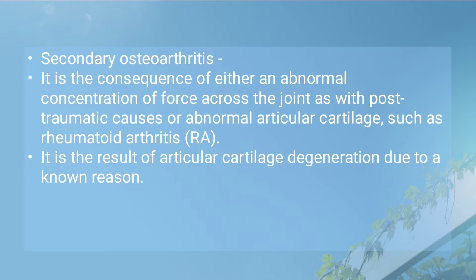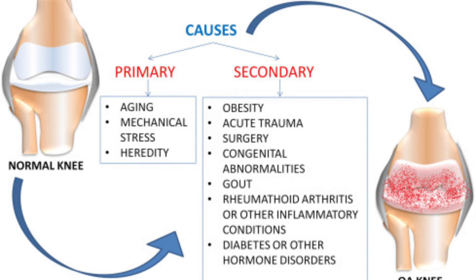Known causes include obesity, joint hypermobility or instability, malpositioning of the joint such as valgus or varus, abnormal postures, previous injuries to the joint like fractures, congenital defects, immobilization, loss of mobility, family history of osteoarthritis, and metabolic causes like rickets.